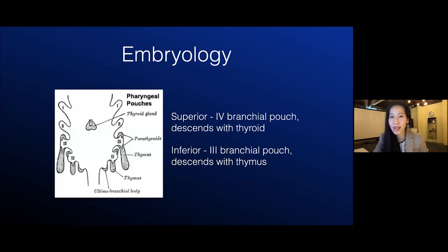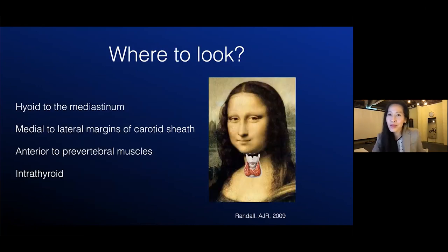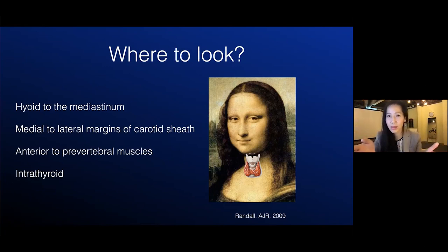The reason behind those ectopic locations is the embryology. The superior glands arise from the fourth brachial or pharyngeal pouch and descend with the thyroid. The inferior parathyroid glands arise from the third brachial pouch and descend with the thymus. So which gland is more likely to be ectopic? It's the inferior gland, because it needs to know when to get off the bus and stop with the thyroid before heading down into the mediastinum. We look for parathyroid adenomas from the level of the hyoid all the way down to the mediastinum where the thymus is, medial to the lateral aspects of the carotid sheath, anterior to the prevertebral muscles, and in the thyroid itself.